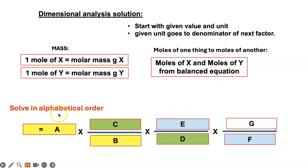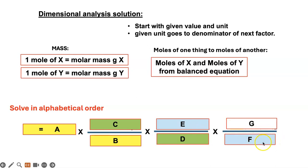You are going to solve it in alphabetical order. I showed you in a color scheme how to set up your problem. You start with the given value, the given units go to the bottom of the next factor — that's why I color coded them. Then you put the next unit you need, and that unit goes to the bottom of the following factor. You cancel them out, then put a unit that will help you go to the next step. Whatever that unit is goes to the bottom of the next factor, and after you write that unit is when you do the top part.